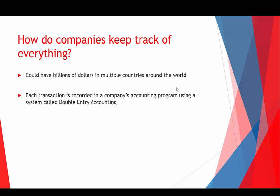Double entry accounting — developed in 1494 by Luca Pacioli — means that every time you have a transaction, you're going to make an entry into at least two accounts. It could be more — three, four, five — but it has to be at least two, and most commonly it's just two.